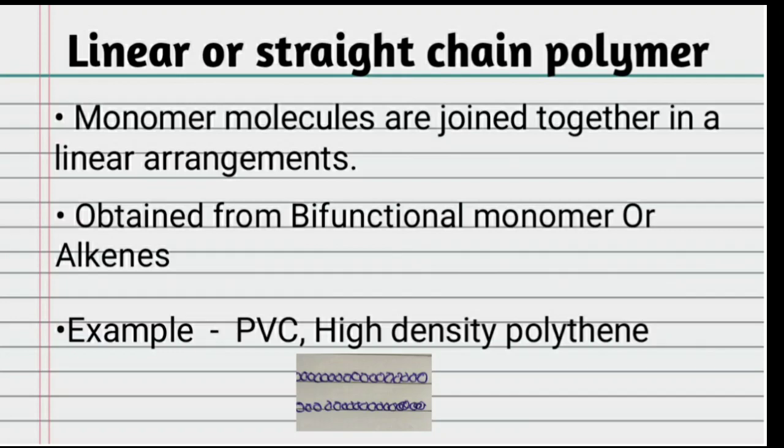For example, in alkenes there is a carbon-carbon double bond. When the double bond breaks, both carbons have a free bond and can expand the chain on both sides — this forms a linear or straight chain polymer. Examples are PVC and high density polyethylene, which has a linear arrangement.